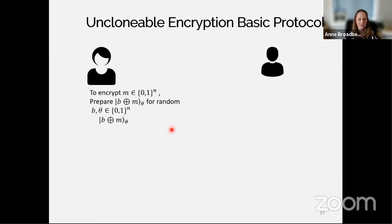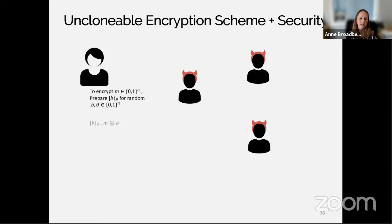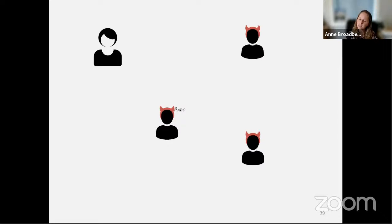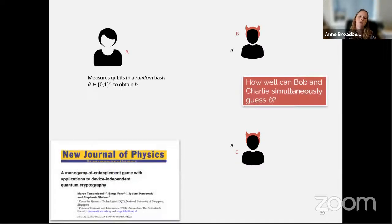Here is a basic protocol: to encrypt message m into a conjugate coding encryption, use a random basis theta and a random bit string b. The ciphertext is the conjugate coding state plus m XOR b, and the key is theta and b. To decrypt if you know theta and b, you use XOR to compute the original message m. For the security game: the adversary tries to pirate the ciphertext, the key is then revealed, and the question is how well can Bob and Charlie simultaneously guess message m.